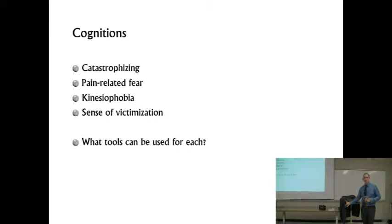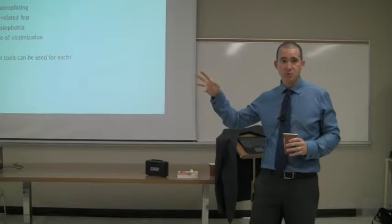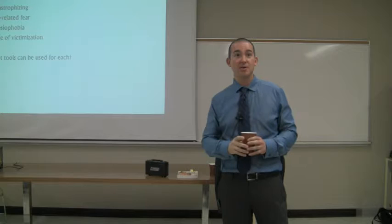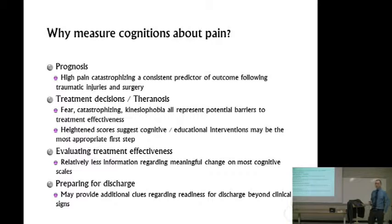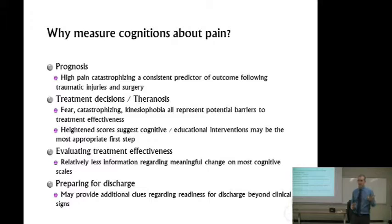Here are some examples of cognitive measures — by no means exhaustive — including catastrophizing, pain-related fear, and kinesiophobia, which is the fear of movement or re-injury. That's how it was originally described. For each of these tools, as with others discussed today, we consider their value for prognostic purposes, evaluative purposes, discriminatory or diagnostic purposes, discharge planning, and treatment decision-making.